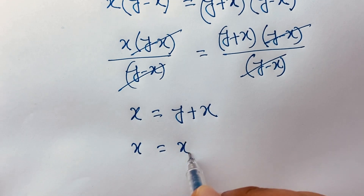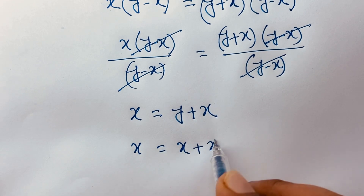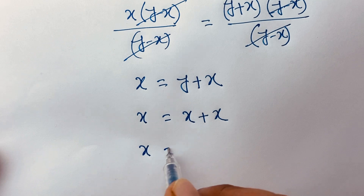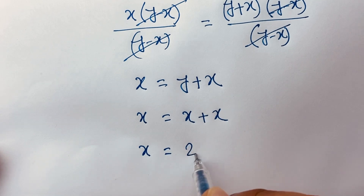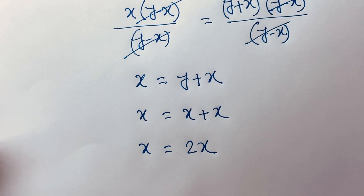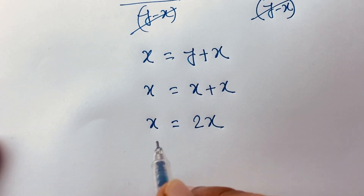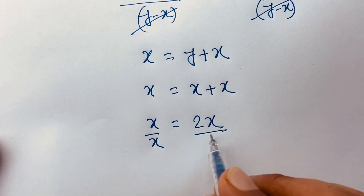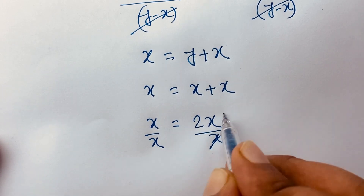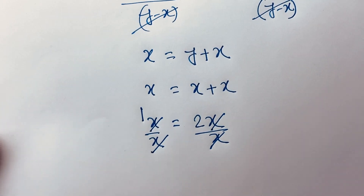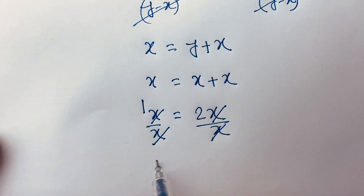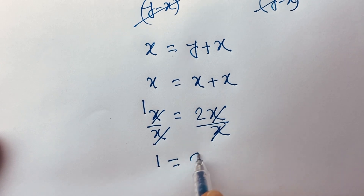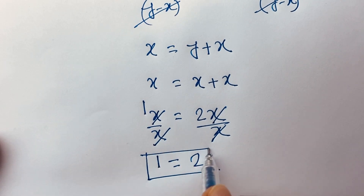Since y equals x, I can say x equals x plus x, which means x equals 2x. Then if I divide both sides by x, the x's cancel and we get 1 equals 2.